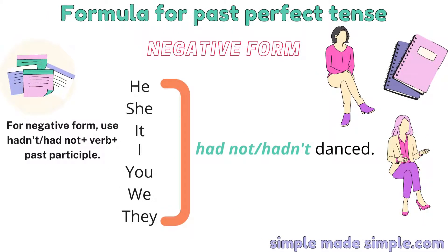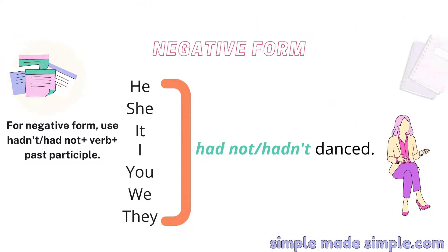For the negative form, you should just add 'had not' or 'hadn't'. For example: he had not danced, they had not danced.